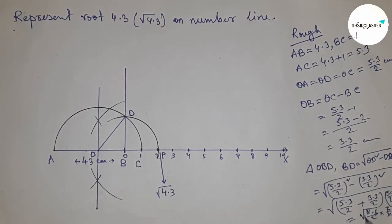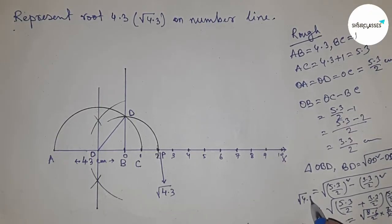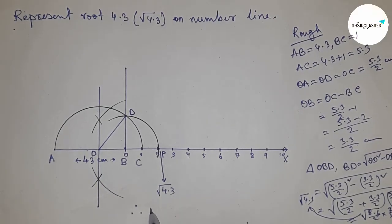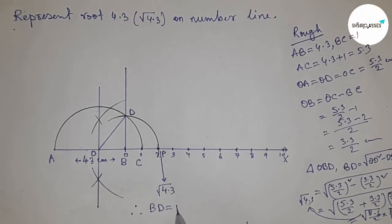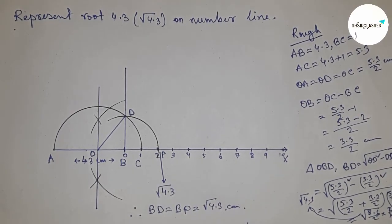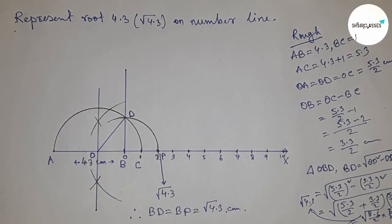Dividing by 2, this is root 4.3. Therefore BD equals BP equals root 4.3 centimeters. That's all, thanks for watching. Please subscribe, like, and comment.